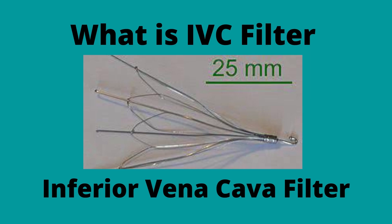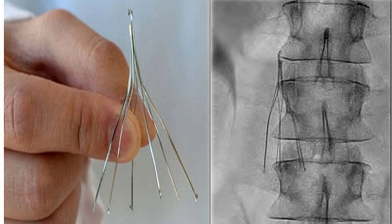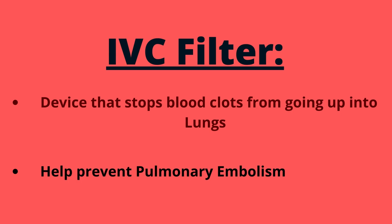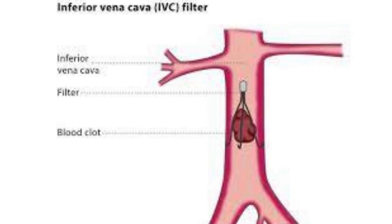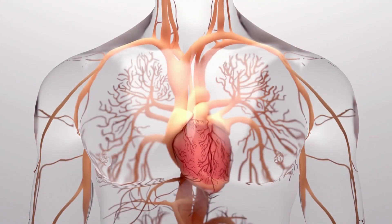An IVC filter, or inferior vena cava filter, is a small wiry device that can stop blood clots from going up into the lungs. An IVC filter is one method to help prevent pulmonary embolism. The inferior vena cava is the major vein that brings oxygen-poor blood from the lower body back to the heart.